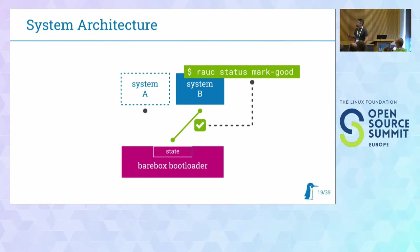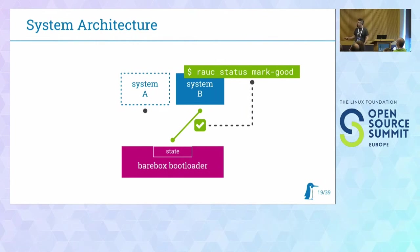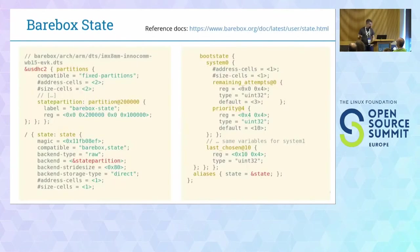...if everything works well, some system service calls the RAUC status mark-good command, which basically cements this bootloader switch. The bootloader then knows that this partition can be booted and there's nothing wrong with it. This Barebox state is a device tree blob, and you have a node here and an SD partition here which you can use as a back-end.